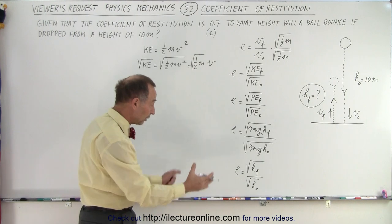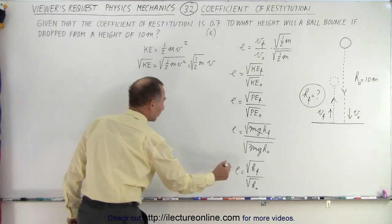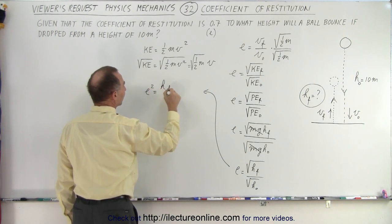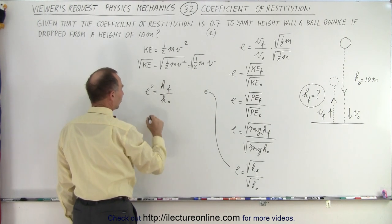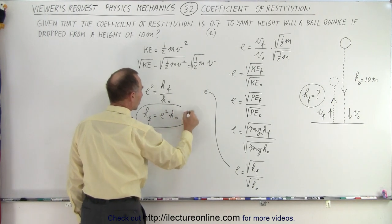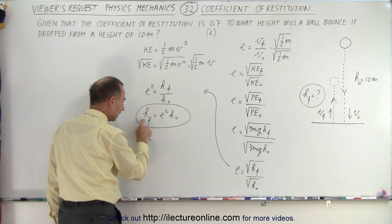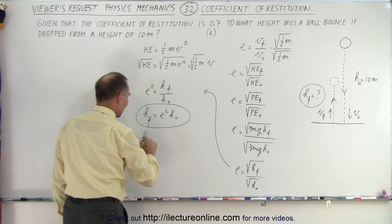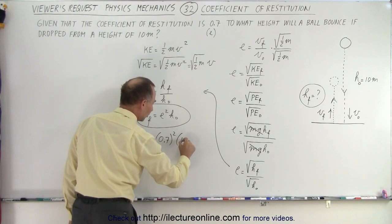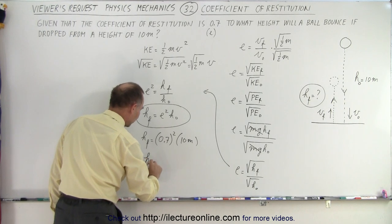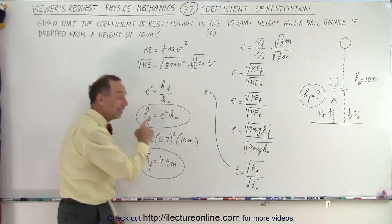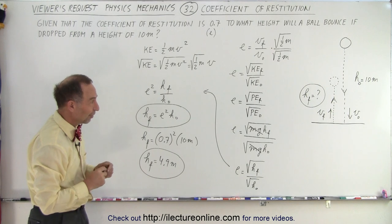Since we're looking for H_final, we square both sides: E squared equals H_final divided by H_initial. Therefore, H_final equals E squared times H_initial. Using E = 0.7, we get H_final equals 0.7 squared times 10 meters. That's 0.49 times 10, so H_final equals 4.9 meters. That is how we use this technique to solve a problem dealing with the coefficient of restitution.